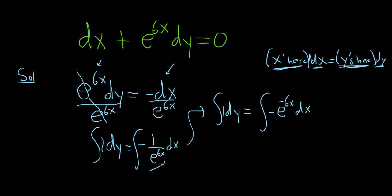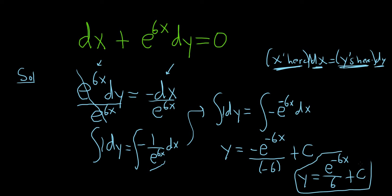So integrating the left-hand side, when you integrate 1, you just get y. Now when you integrate e to the negative 6x, you just divide by negative 6. So it'll be negative e to the negative 6x over negative 6 and then plus c. And then you just simplify. So you would just get e to the negative 6x over 6 plus c. And that would be our final answer.